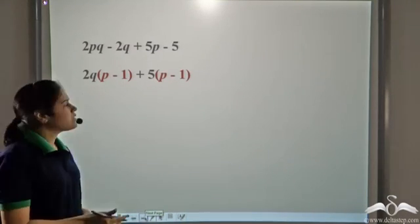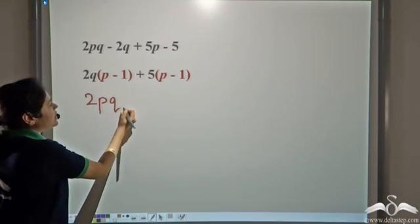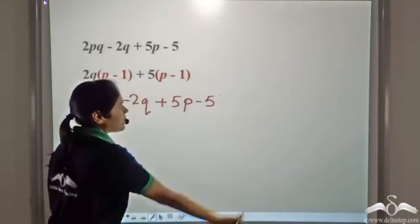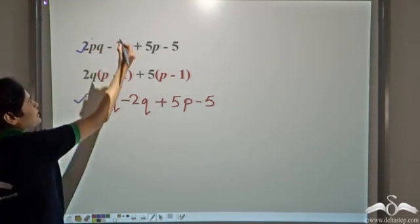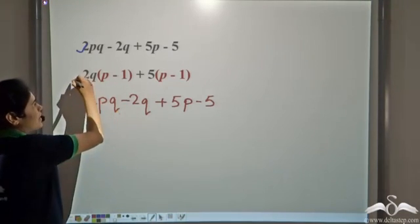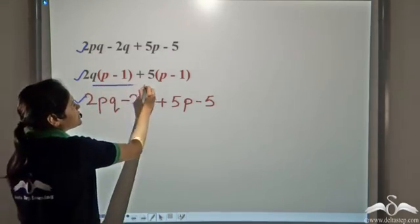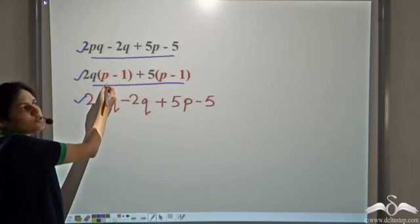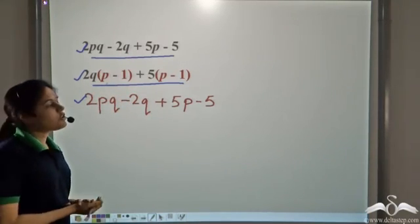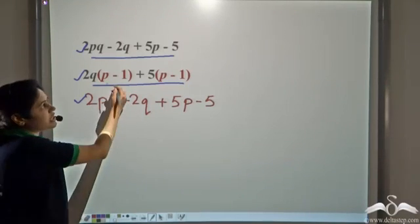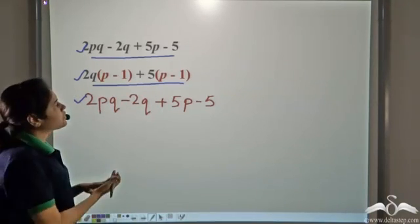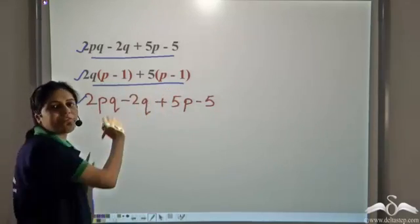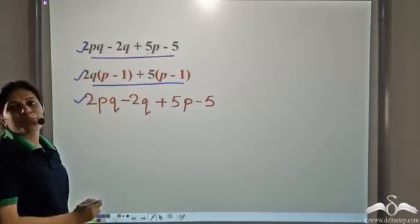Have a look at this expression again. We expand it and we get 2pq minus 2q plus 5p minus 5. We see that this expanded form is simply the same expression written out. The special thing about the original expression is the way in which it is written — it is written in groups of two, and each group has a common factor, whereas this expression is the expanded form of that.